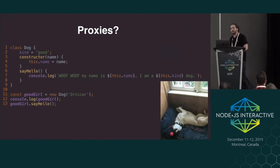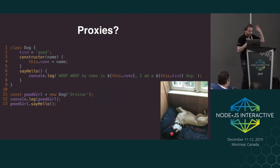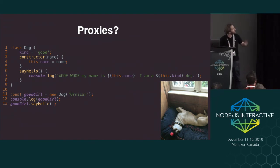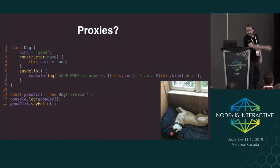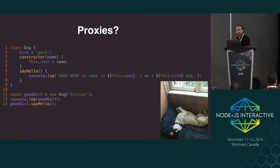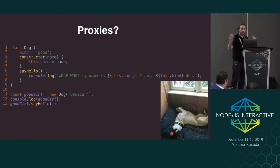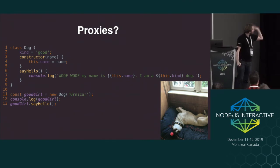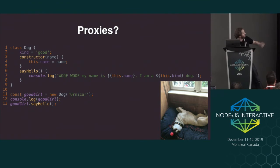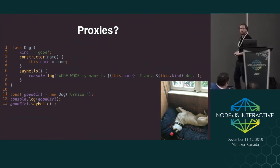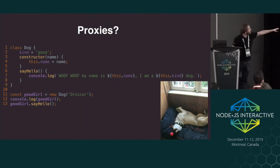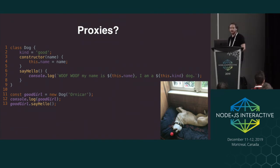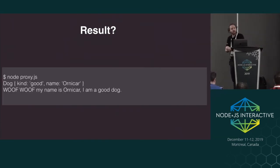To talk about proxies, I need to talk about dogs. Let's say you have a dog class where all good dogs are declared good. Dog has a constructor with a name, and a method named sayHello that console.logs 'Woof woof, my name is [name], and I am a good dog.' On line 11 we create a new good girl named Ornica. We console.log the dog and tell it to say hello.